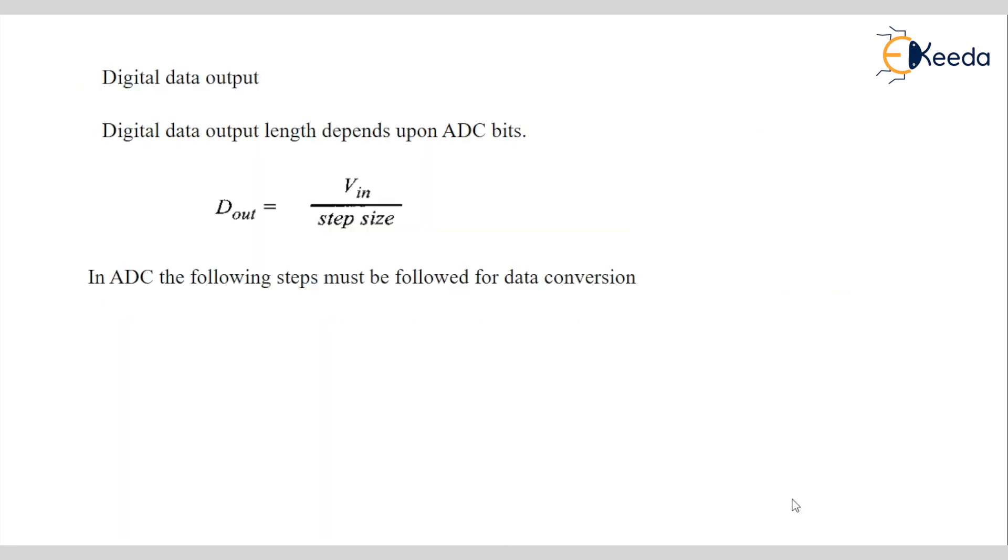The digital data output. Digital data output is equal to Vin divided by step size. Step size we already know. The VReference we already know. From the VReference we can calculate step size and we know the what is the exact difference in output of the sensor. Then we can find out digital output to cross set our hex value. Or for example, if I want to set some threshold in microcontroller.